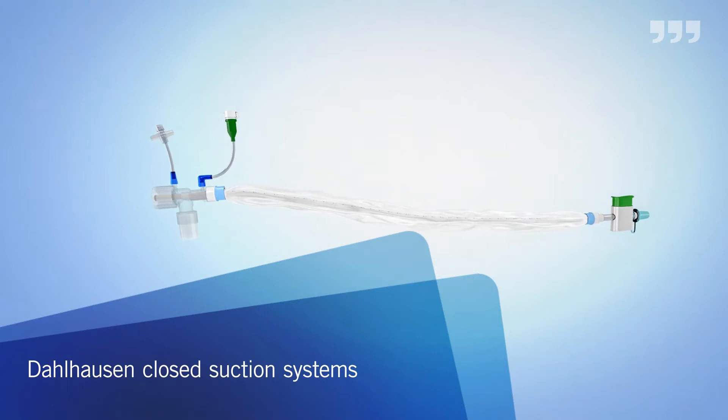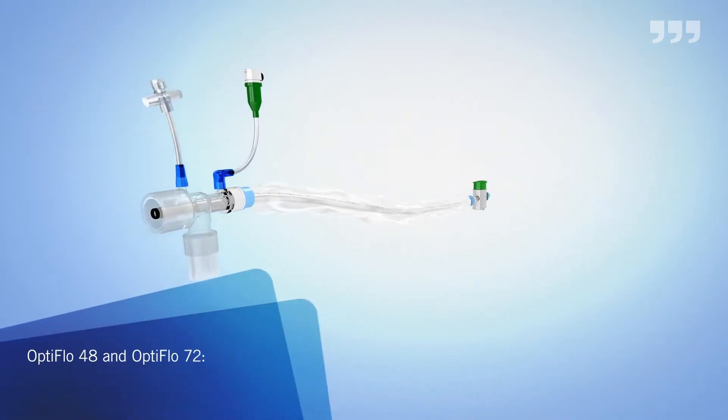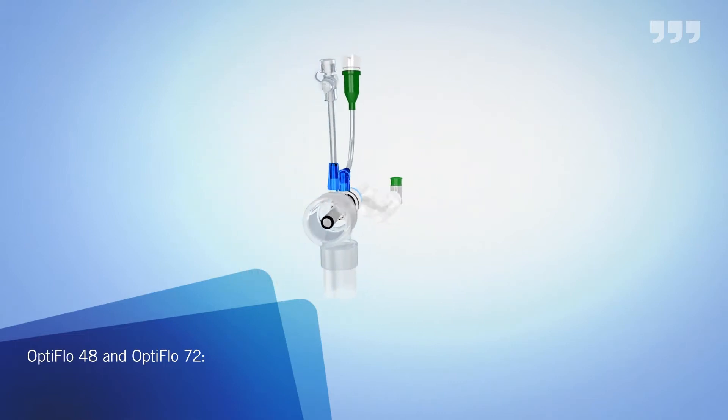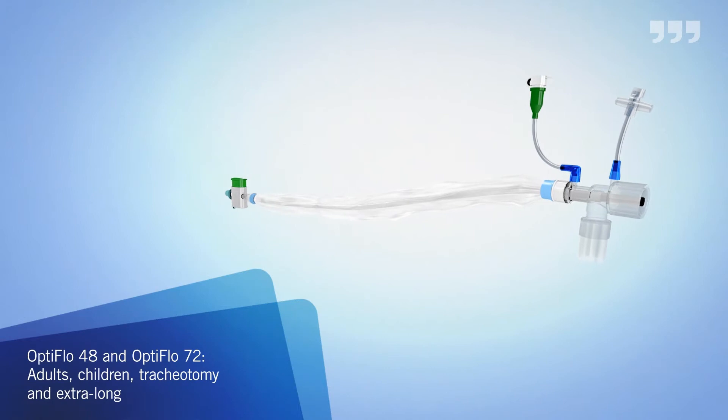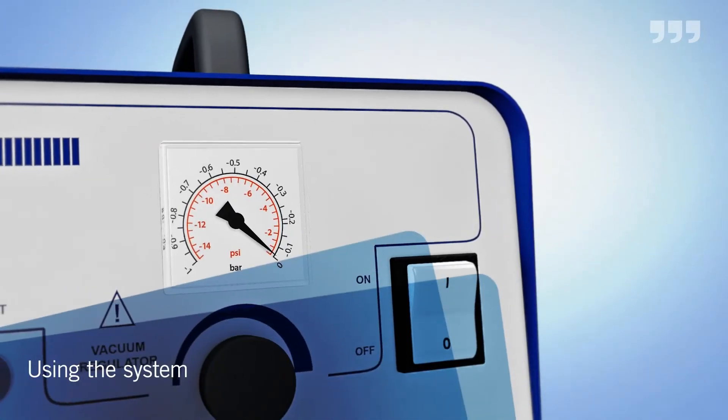Dahlhausen closed suction systems are specially geared to meet the needs of your nursing staff and your patients. Our OptiFlow models are designed for either 48-hour or 72-hour usage, and these systems are available for adults, children and tracheotomy patients, as well as extra-long models. Using this system is extremely simple.